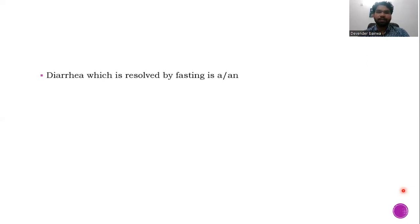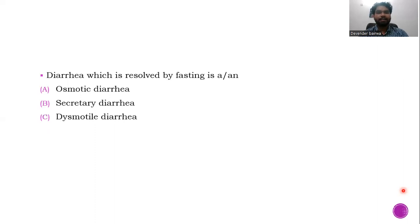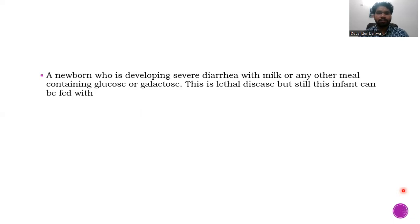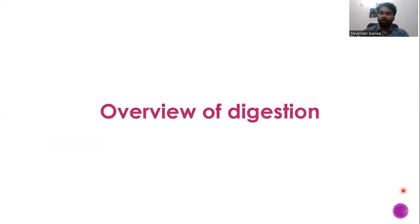The next scenario: diarrhea which is resolved by fasting is generally A) osmotic diarrhea, B) secretory diarrhea, C) dysmotility diarrhea, or D) other. Next question: a newborn developing severe diarrhea with milk or any food containing glucose or galactose — this is a lethal disease, but can this infant be fed with A) lactulose, B) lactose, C) sucrose, or D) fructose? I will not be telling you the answers; after this lecture, you will be able to answer these by yourself.